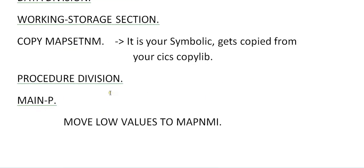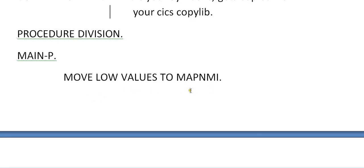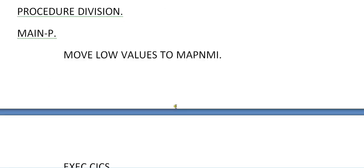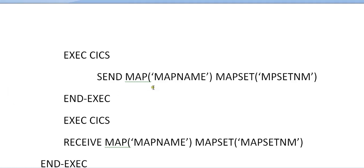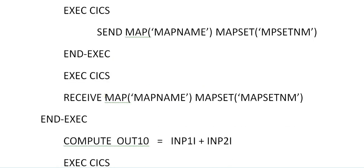Then coming into the procedure division, move low values to the map name inputs — it means that it passes all zeros, considering that there are no junk values passed to these variables. Now EXEC CICS SEND MAP. I am trying to send a map onto the CICS screen. It will just send a map onto the screen with a particular map name or map set name. In the same way, EXEC CICS RECEIVE MAP with map name and map set name. Once you send your map onto the screen, you have field 1 and field 2, and after you enter your fields, the receive statement receives those fields and stores them into the variables.